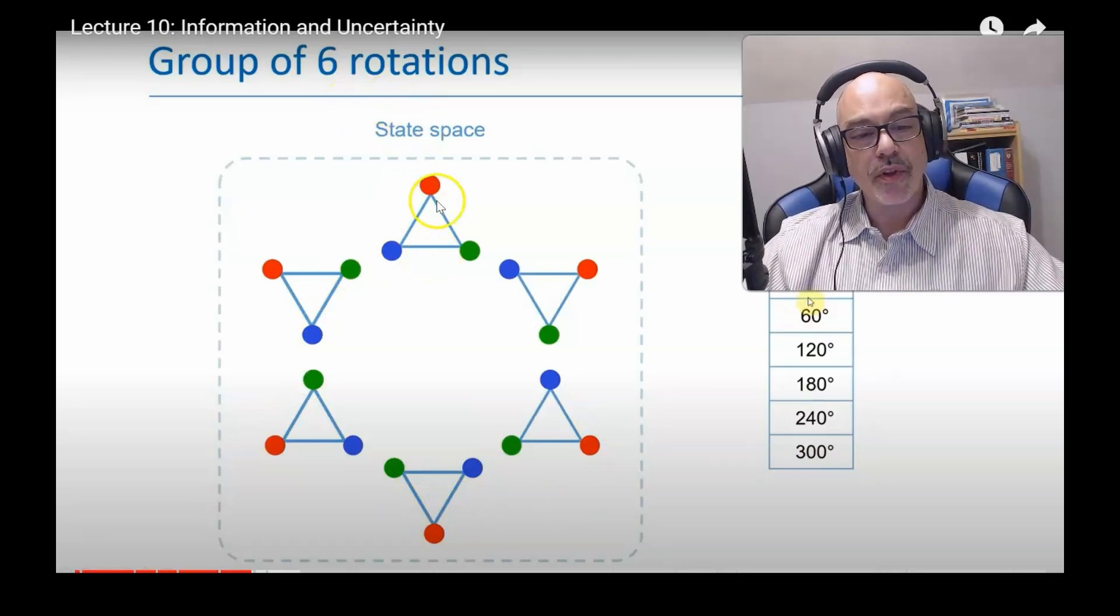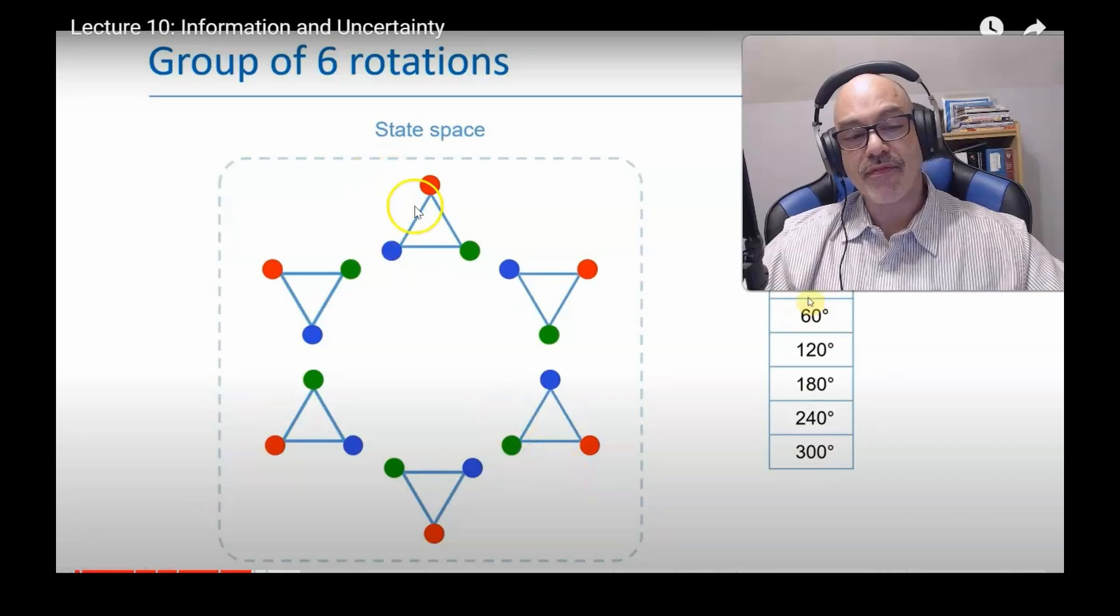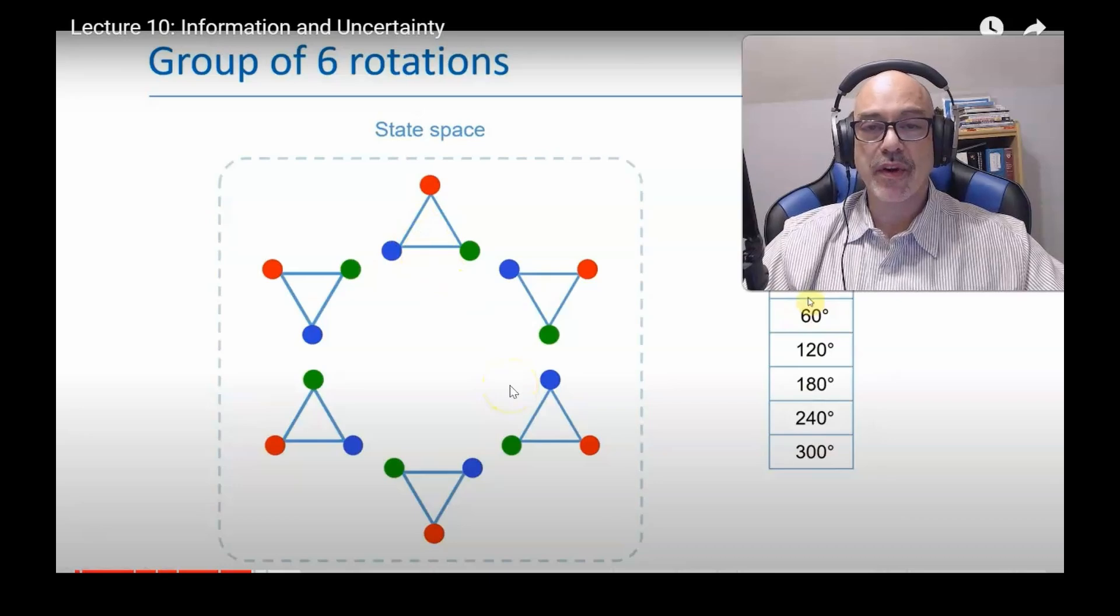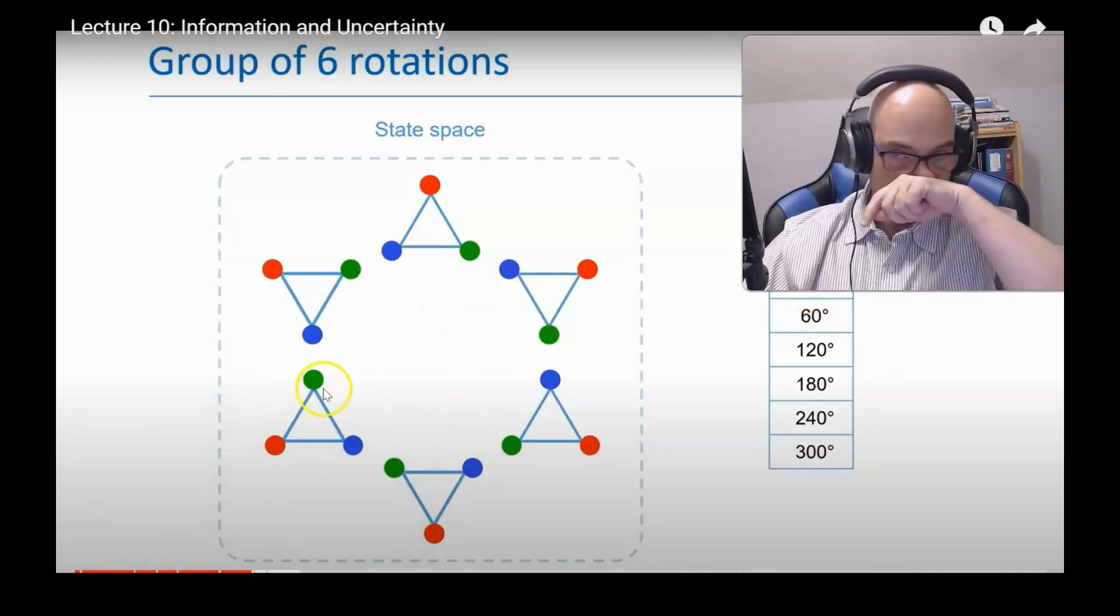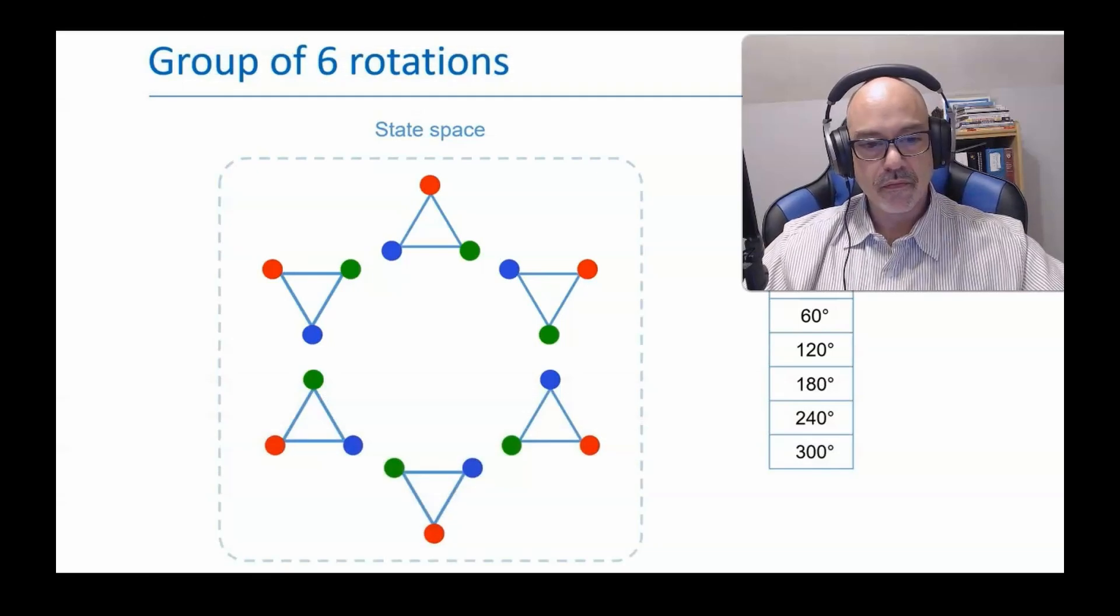Before, there were only three orientations of this triangle, which was vertex up, and before being the case where there was 120-degree rotation. When you have a 60-degree rotation, it looks like this.